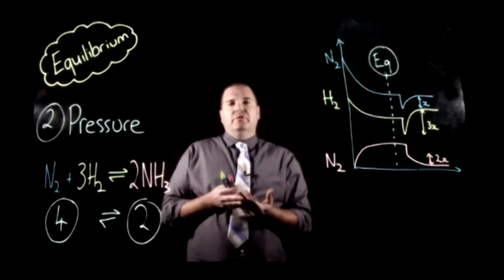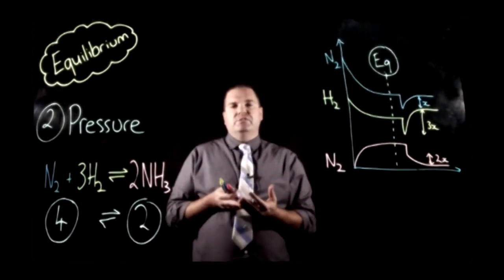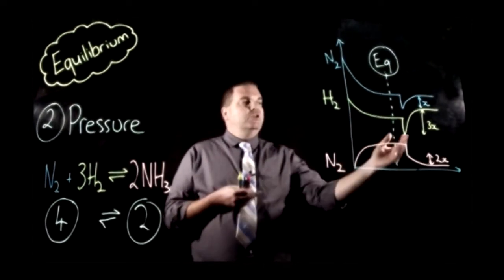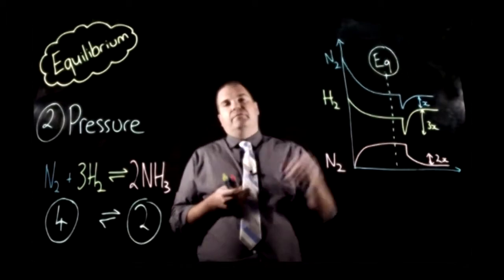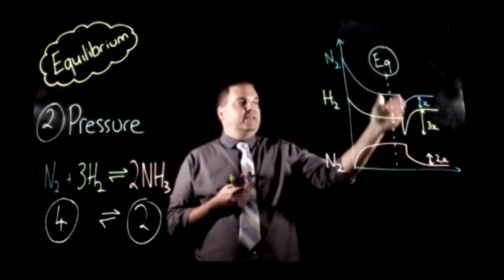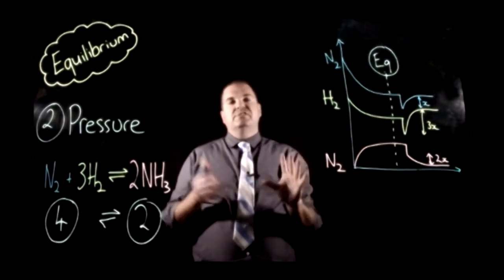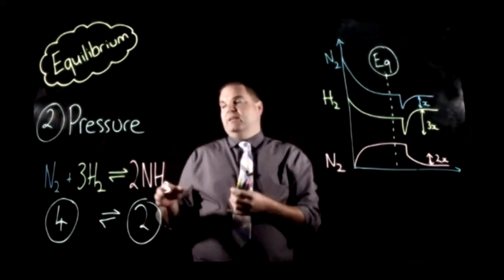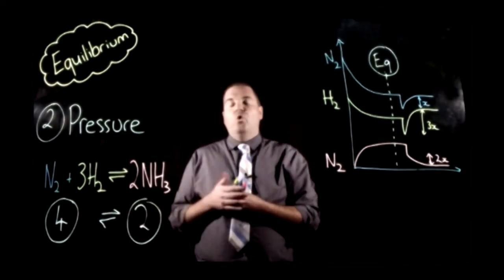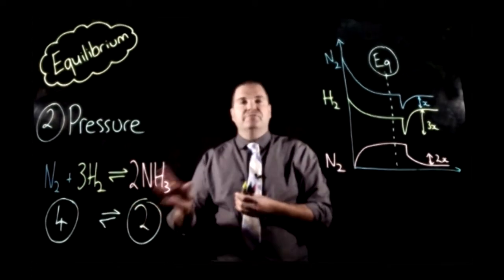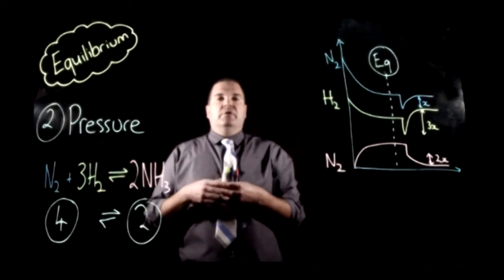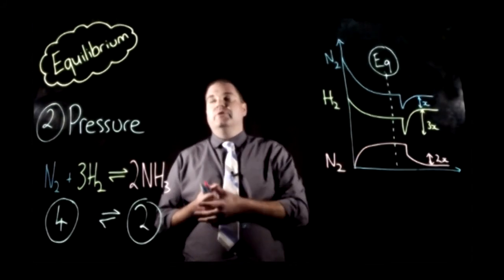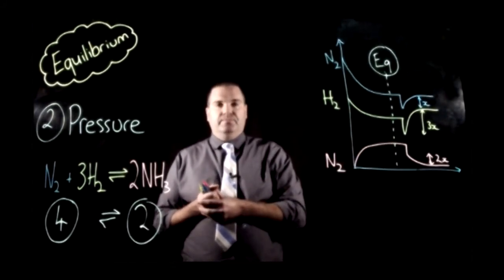So that's pressure. It's really easy to tell if a pressure change has occurred on a graph because all your species go up or down straight away. If you increase the pressure, the concentration of all of them goes up; if you decrease your pressure, the concentrations go down. Then your system shifts to counteract the change by either favouring the side with the most number of moles if it's a decrease in pressure, or favouring the side with the least number of moles if it's an increase in pressure. You might want to look over this a couple of times - make sure you can do the graph. We've got one more to look at, which will be the effect of temperature. Thanks guys, see ya.